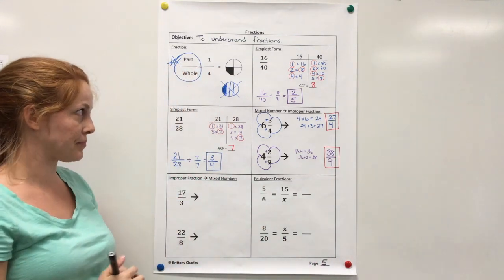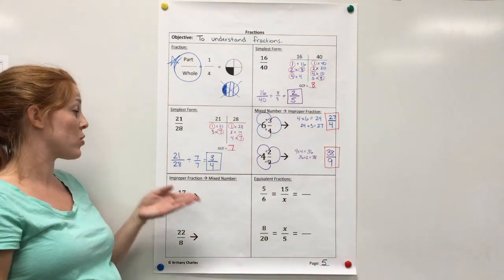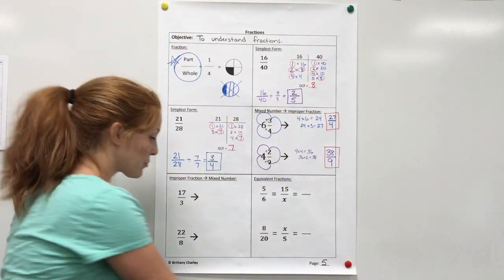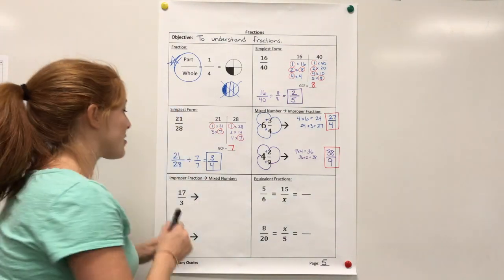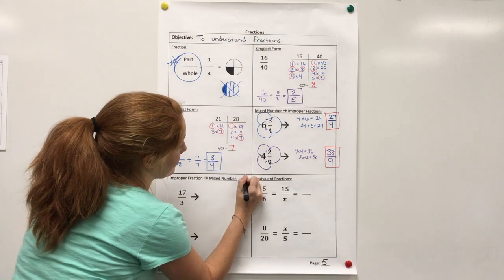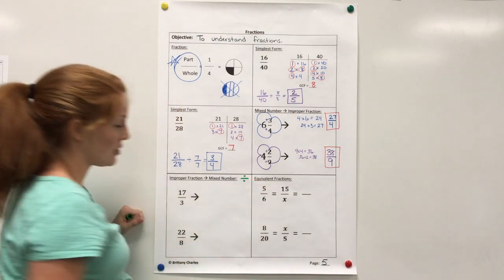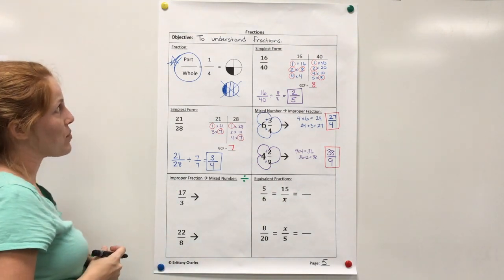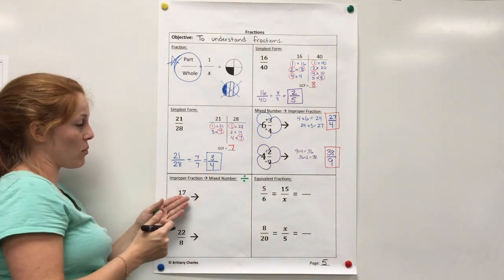All right. Now we're going to do the opposite. We're going to start with the improper fraction and make it into a mixed number. Well, the way to do this is divide. All right. So I'm going to start.